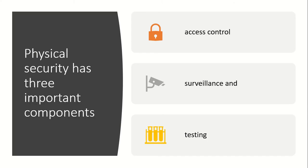Physical security has three important components. The first is access control — you control the area or perimeter, determining who can enter, who cannot enter, and if somebody can enter, what things they can touch or access.